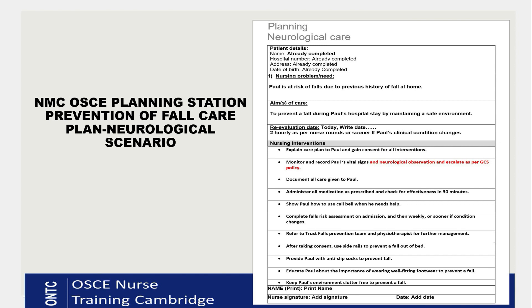Third intervention: document all care given to Paul. Fourth: administer all medication and check for effectiveness. Fifth: show Paul how to use the call bell to ask for help whenever he needs to get out of bed, to make sure he gets assistance and doesn't attempt to mobilize alone.